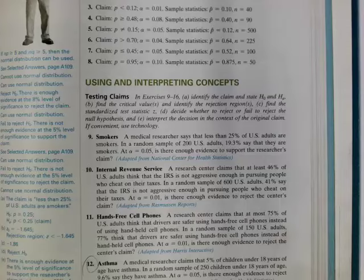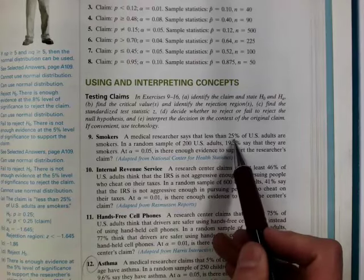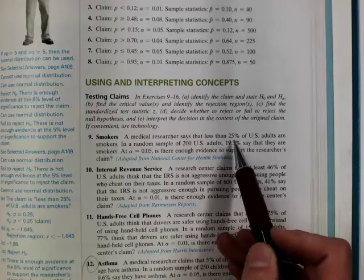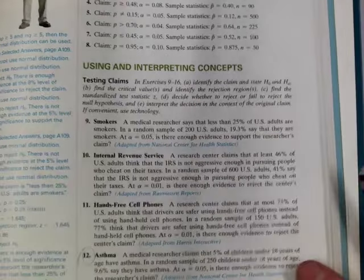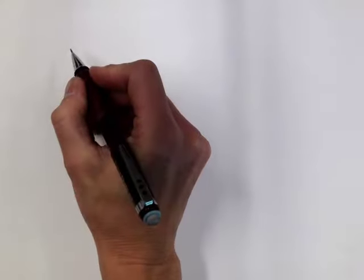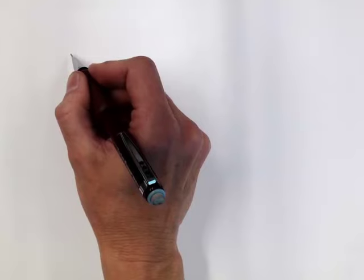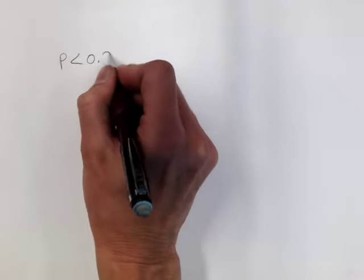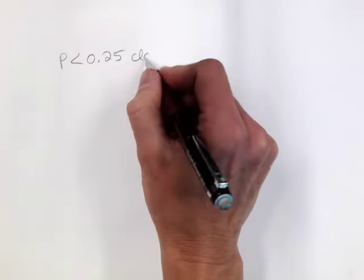If this were all mixed up on a test, the first thing you want to identify is what parameter are we testing. Because the claim is about a percent or a proportion, this would be a hypothesis test about P. So the first thing I'm going to do is write that claim in terms of the parameter. The researcher says less than 25% — that does not include 25% — so the claim is P is less than .25. That would be the researcher's claim.